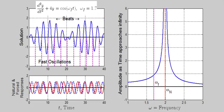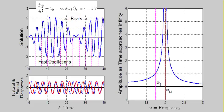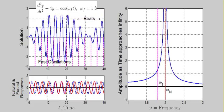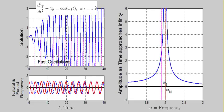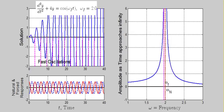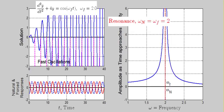As the forcing frequency approaches the natural frequency, observe that the amplitude of the undamped oscillations increases without bound until the forcing causes the oscillator to resonate. This phenomenon, known as resonance, occurs when the frequencies are equivalent.